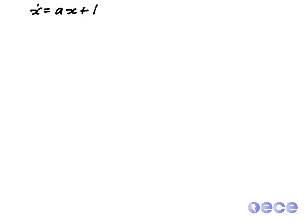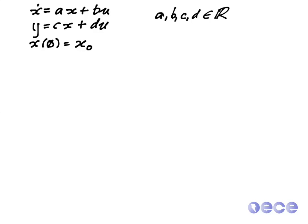Let's start with our standard definition of a linear system. X dot equals AX plus BU. Y equals CX plus DU. X at time zero is equal to some constant X zero. Here A, B, C, and D are in the real numbers. X is a time varying signal X of T, U is a time varying signal U of T, and Y is a time varying signal Y of T.